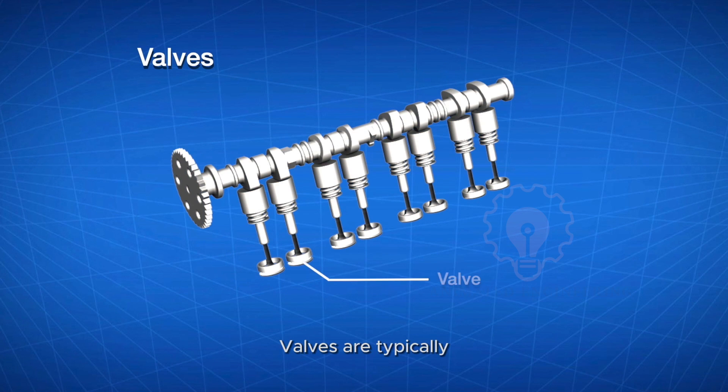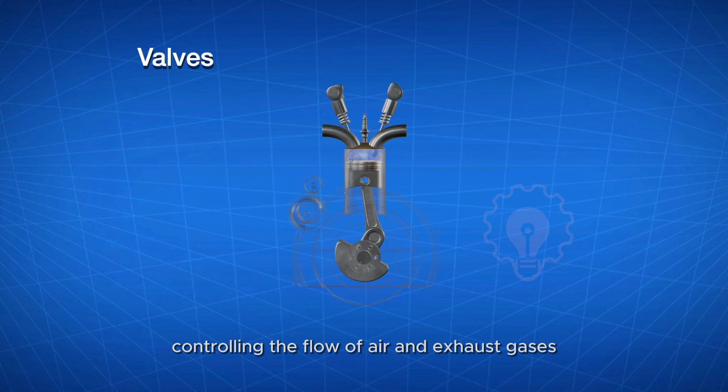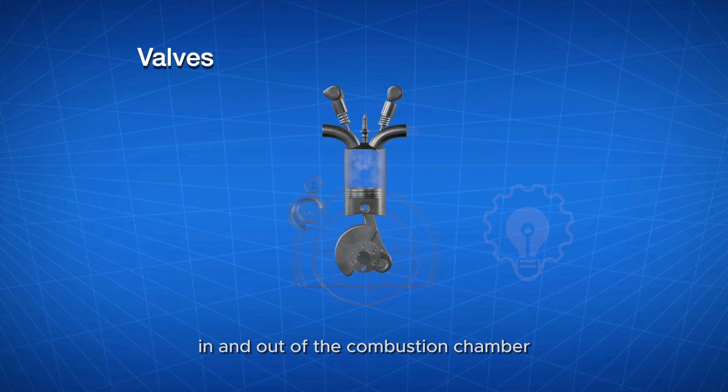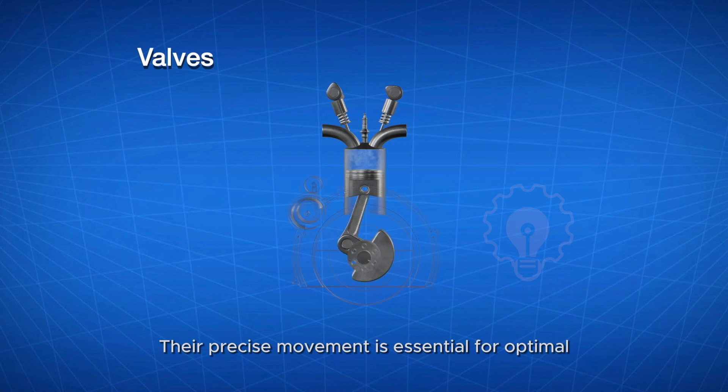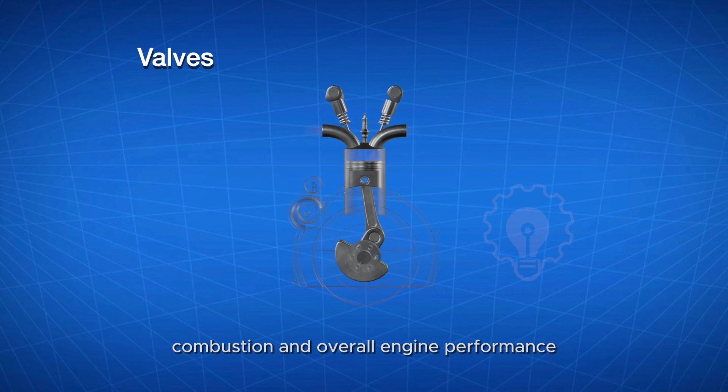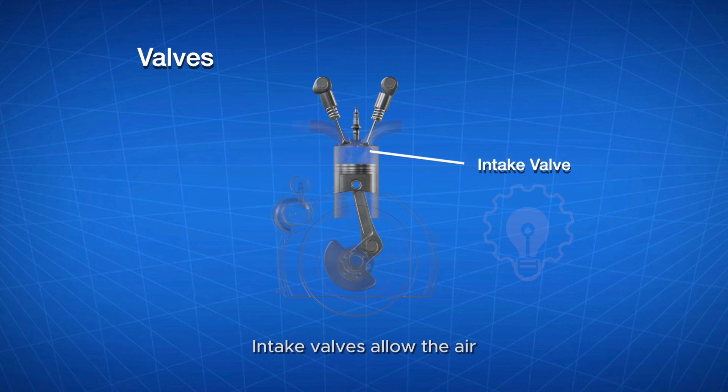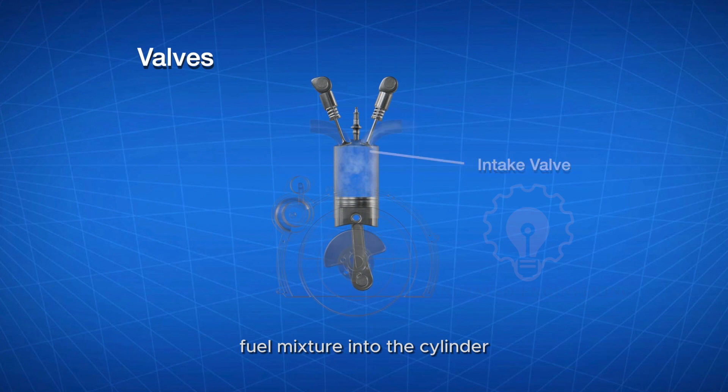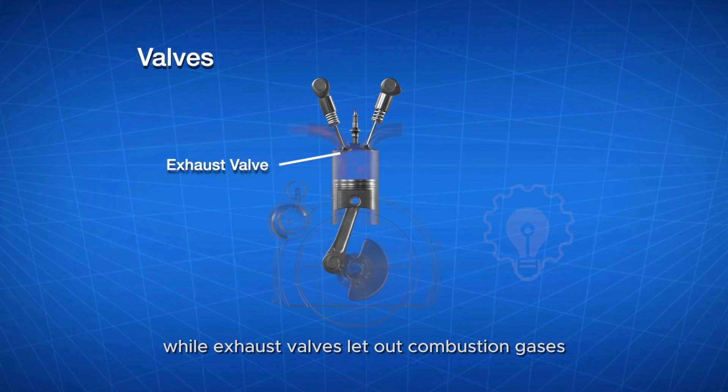Valves: Valves are typically made of heat-resistant alloys such as stainless steel or titanium to withstand high temperatures. Valves act as gatekeepers, controlling the flow of air and exhaust gases in and out of the combustion chamber. Their precise movement is essential for optimal combustion and overall engine performance. Intake valves allow the air-fuel mixture into the cylinder, while exhaust valves let out combustion gases.